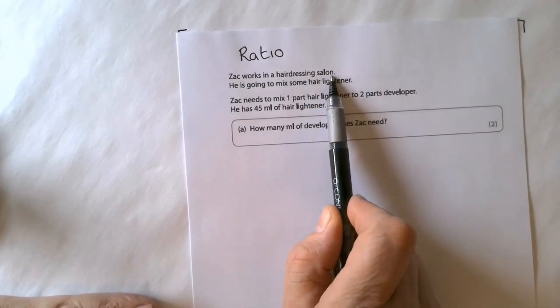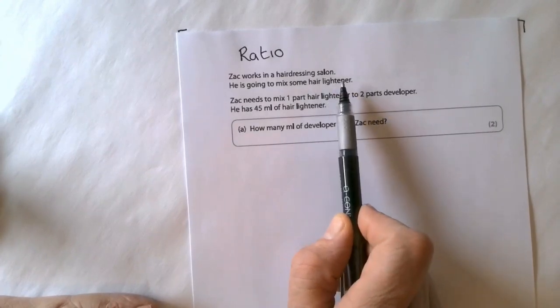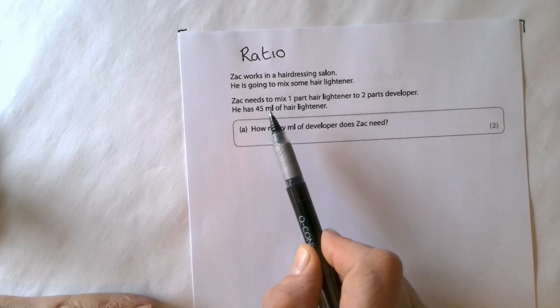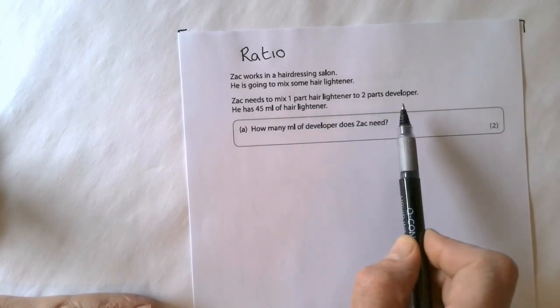Zack works in a hairdressing salon. He is going to mix some hair lightener. Zack needs to mix one part hair lightener to two parts developer.